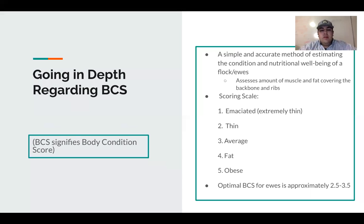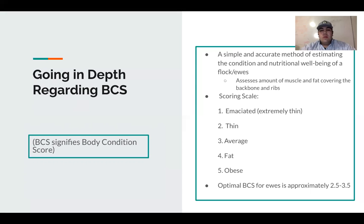Going in depth regarding the body condition score, or BCS — it's a simple and accurate method of estimating the condition and nutritional well-being of the flock, assessing the amount of muscle and fat on each individual animal covering the backbones and ribs. You score each individual on a scale of one to five, one being extremely thin all the way to five being obese. Ideally you want a three, maybe close to four, but never a full four or five. The optimal range for majority of herders is two and a half to three and a half.